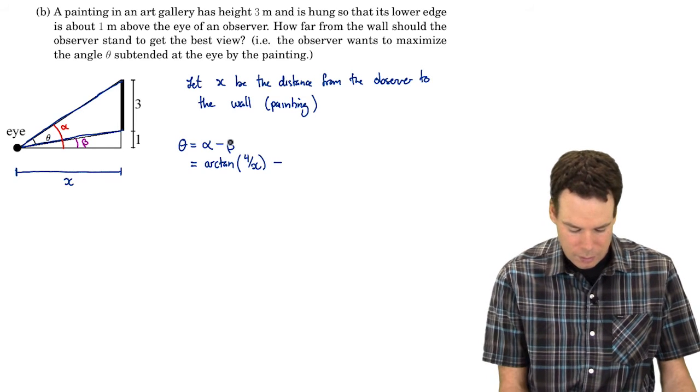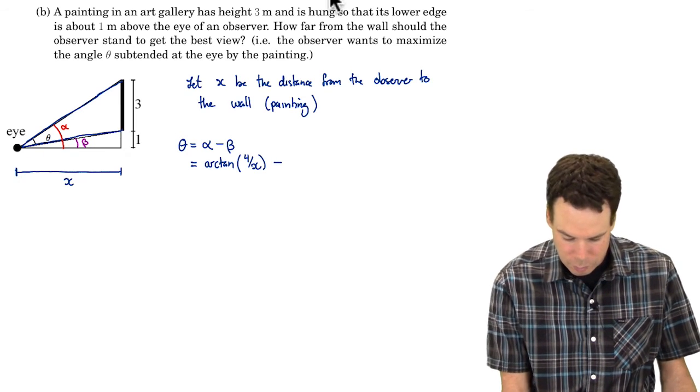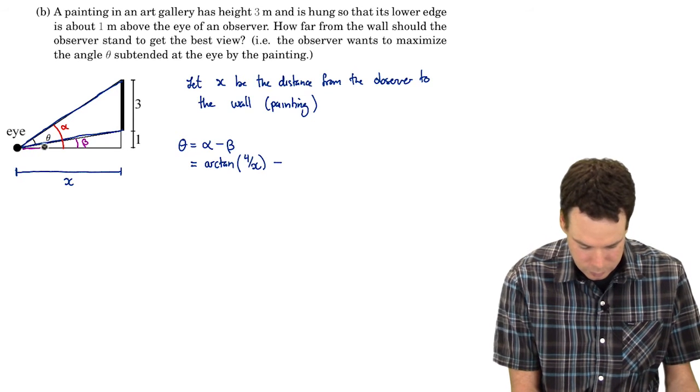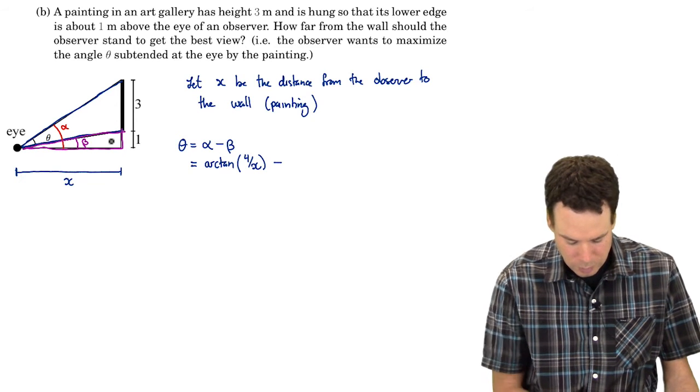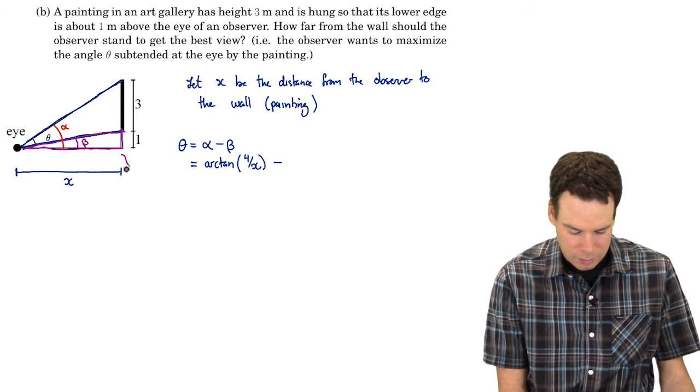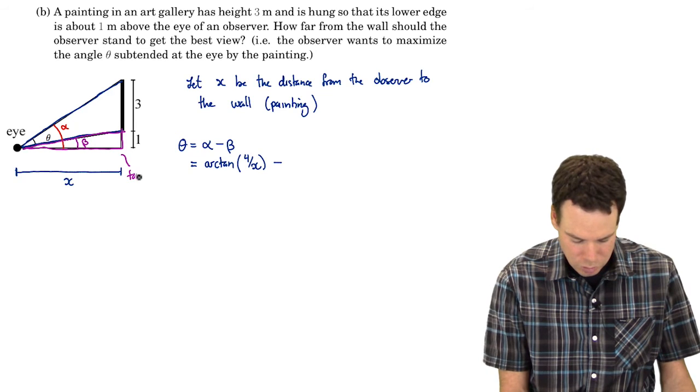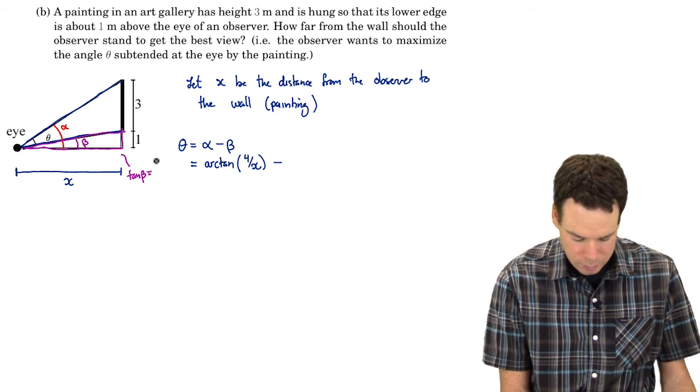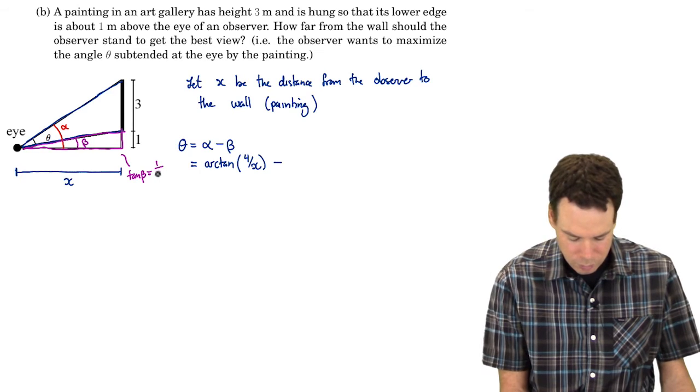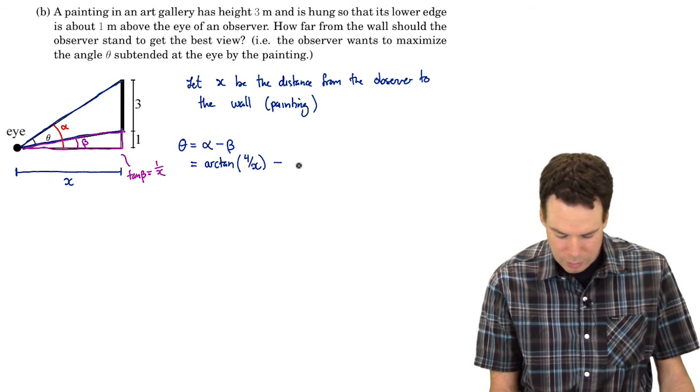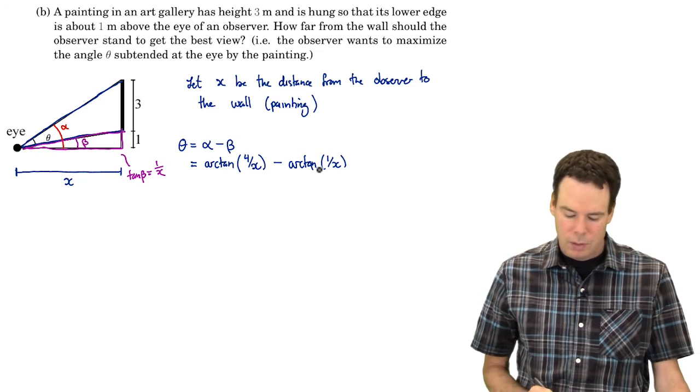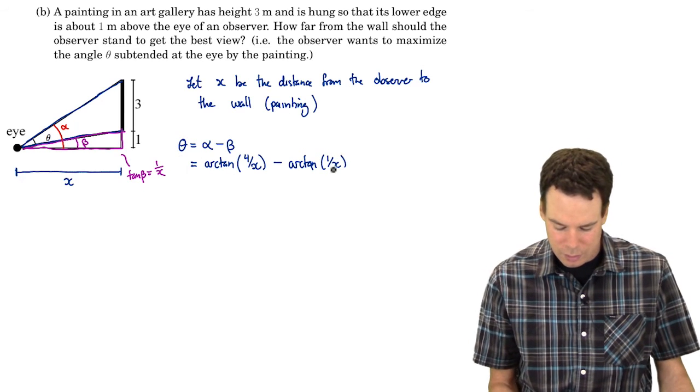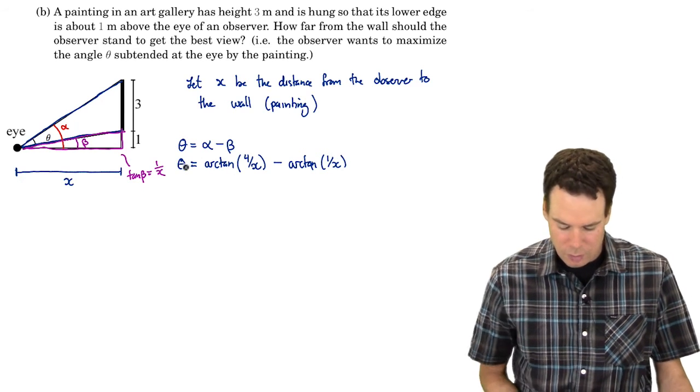Alpha and beta are now angles in this right triangle. And so if I look at angle alpha, alpha is related to the height of the big right triangle and the base of the big right triangle by tangent. Tan of alpha is side opposite 4 over the side adjacent which is X. So that means that alpha is arctan of 4 over X. And what about beta? Tan of beta is side opposite 1 over side adjacent which is X. So what that means is that beta is arctan of 1 over X. And so there we go. We've got our theta expressed entirely in terms of our variable X.